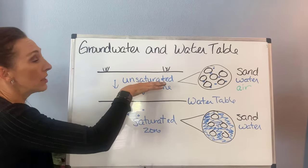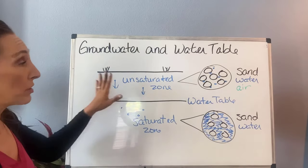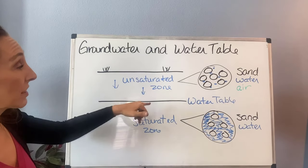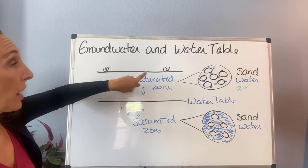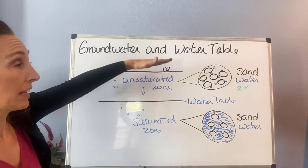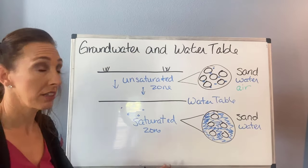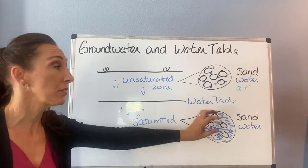So groundwater is any water stored below the earth's surface, and the water table is the line that separates the unsaturated area—sand or rock material with water and air—from the saturated zone, which is just rock material plus water.